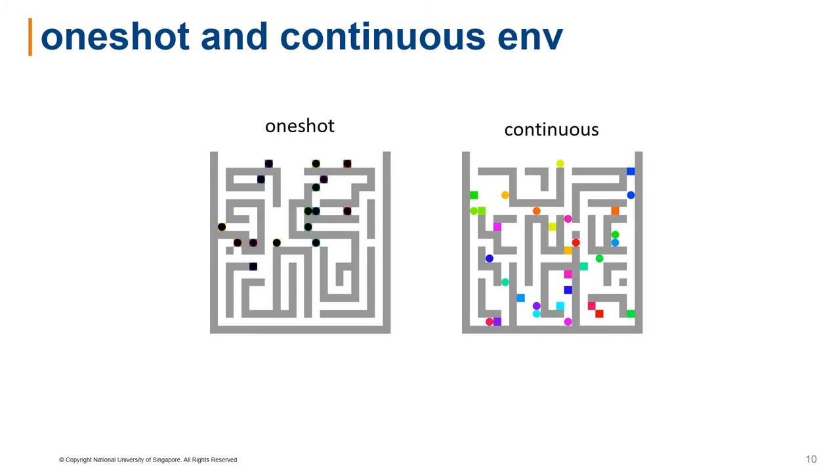The objective in lifelong multi-agent pathfinding is the maximization of throughput, which means the average number of targets reached per unit time per agent.